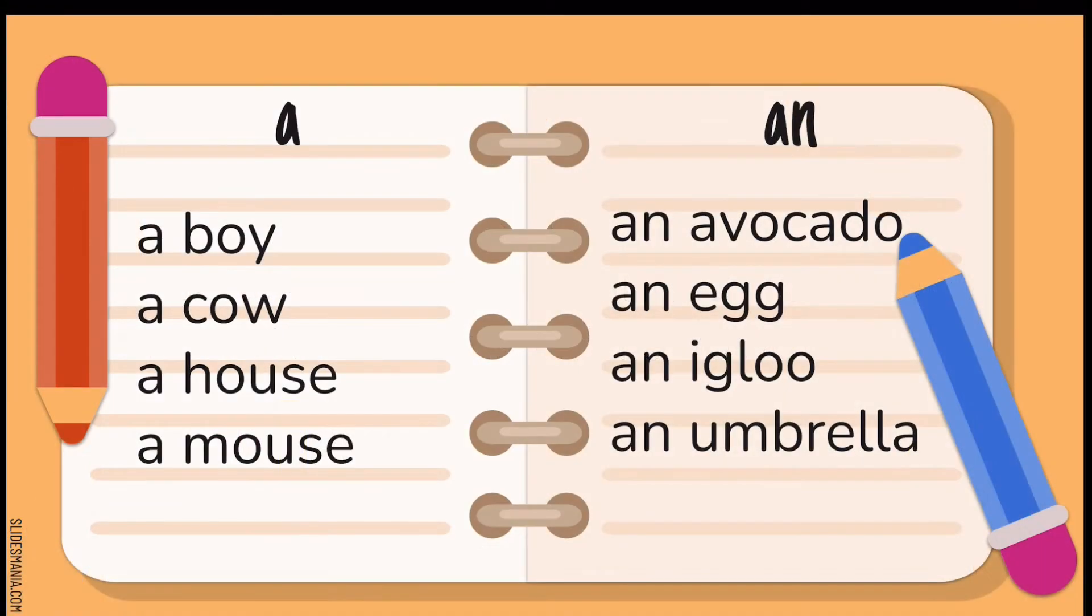Let's take a look at the other examples. So, a boy, a cow, a house, a mouse, an avocado, an egg, an igloo, an umbrella.